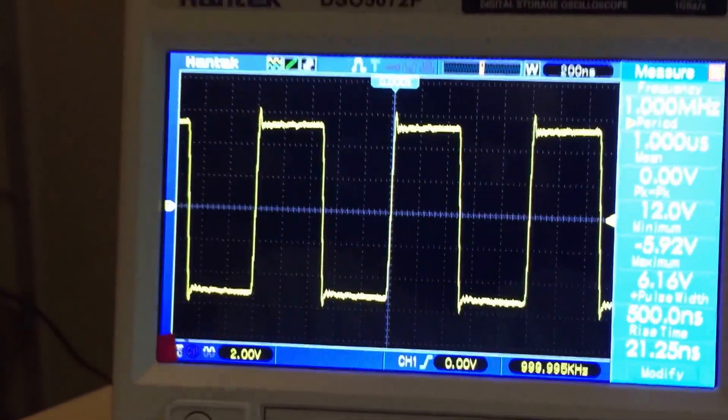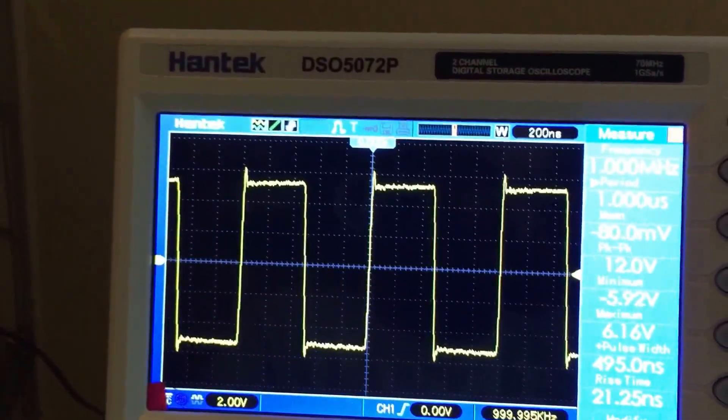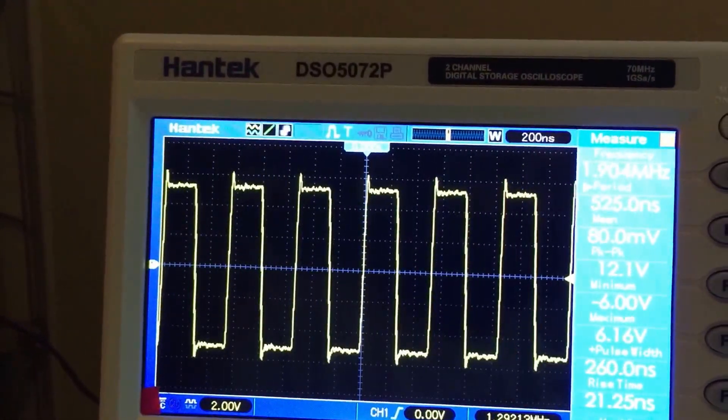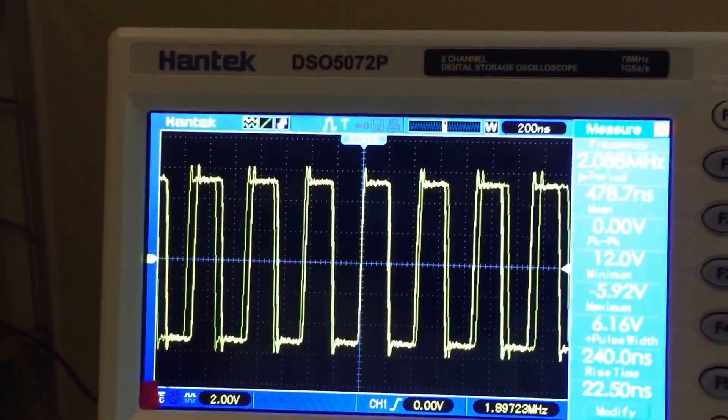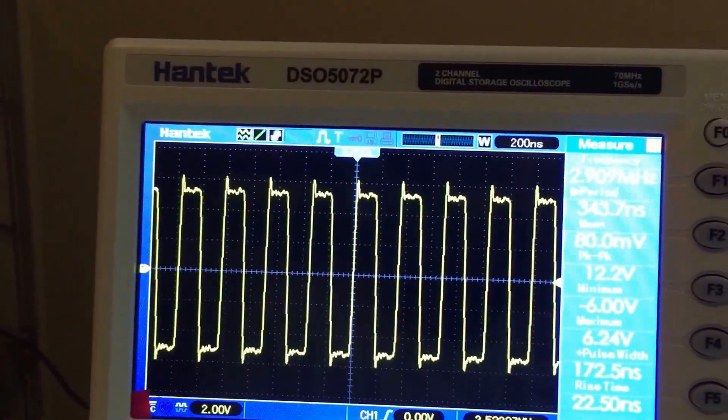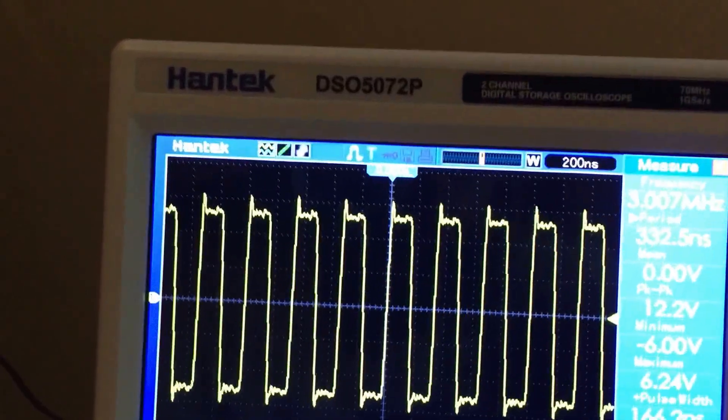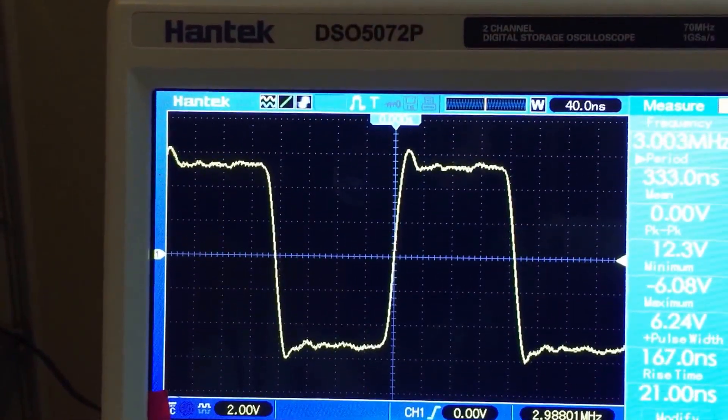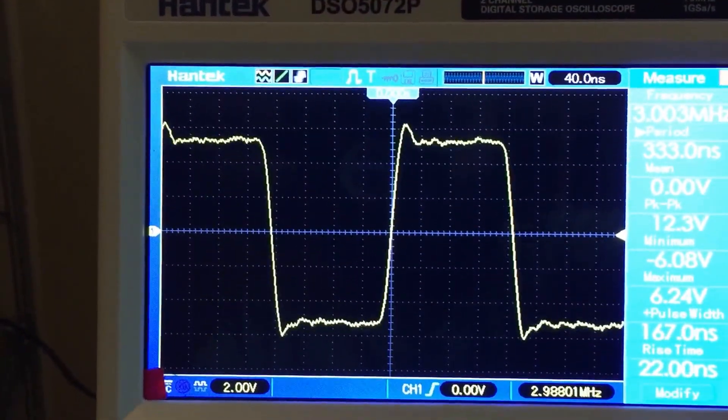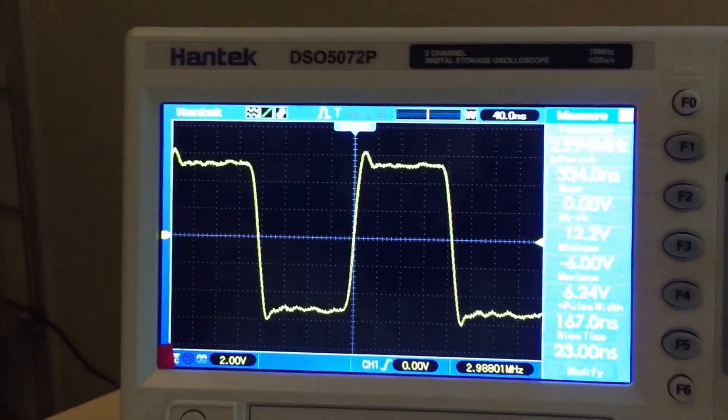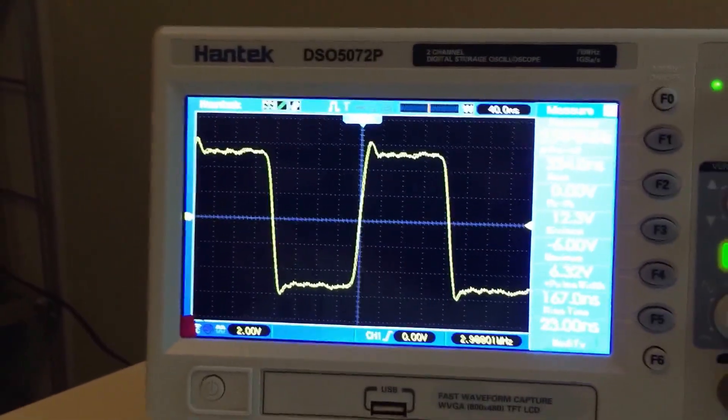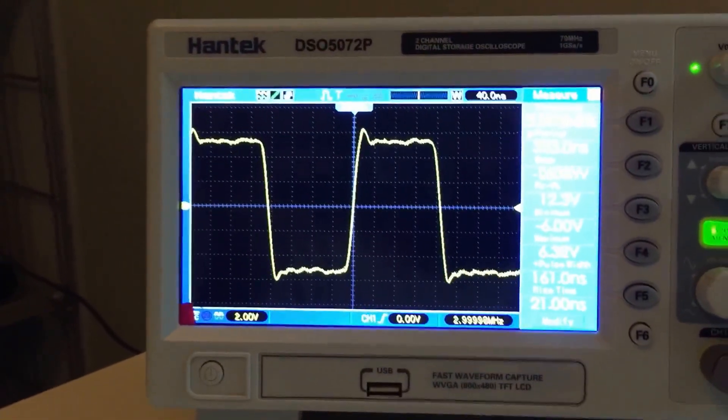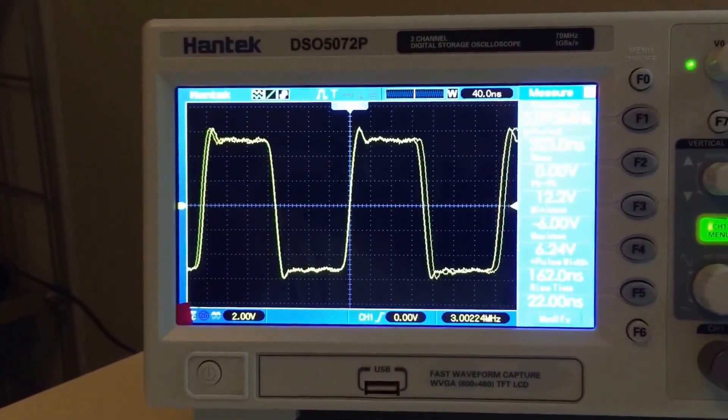Then I keep increasing it. There's 2 megahertz and we'll get it to 3 and then we'll readjust. Here's 3 megahertz and this is what we're seeing now for our square wave, which for all intents and purposes is a square wave but definitely not as clean as it was before.